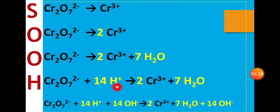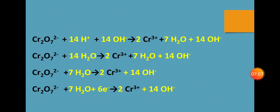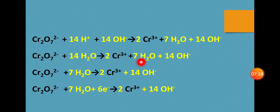For basic medium, we add OH- to both sides where there are H+ ions. The OH- reacts on the left side and right side. We add 14 OH- to both sides. 14H+ plus 14 OH- gives 14H2O, because 1H+ plus 1 OH- gives 1H2O. On the right side we already have 7H2O, so cutting: 14H2O minus 7H2O leaves 7H2O on the left side.